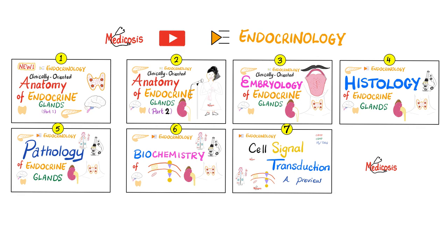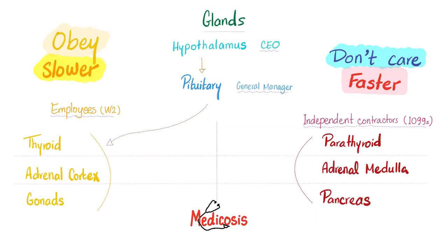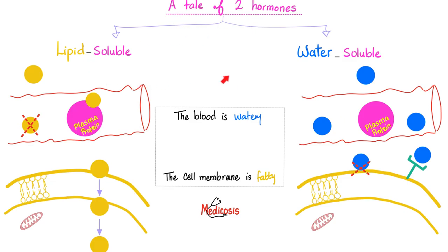This is my endocrinology playlist - please watch these videos in order for maximum retention. You have glands that listen to the pituitary and glands that do not care. The ones that obey the pituitary are slower because the hormones are fat-soluble. But these ones have faster water-soluble hormones. Why faster? Because the receptor is on the outside, on the cell surface - that's why we call them cell surface receptors. This is the tale of two hormones: the lipid-soluble and the water-soluble.